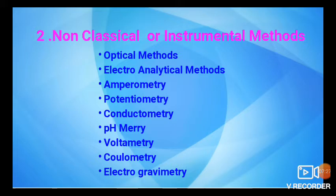Then there are electroanalytical methods. In this category, electrically conductive probes such as electrodes are made in contact with the analyte solution. Examples of electroanalytical methods include amperometry, potentiometry, conductometry, and pH-metry. These all involve a combination of electrical and analytical changes in the substance — in potentiometry there is a potential change, in conductometry there is conductance change, and in pH-metry obviously the pH changes.